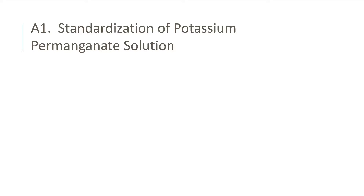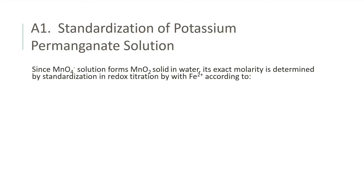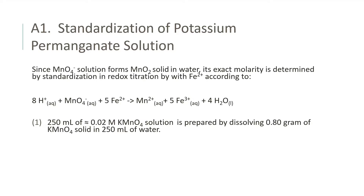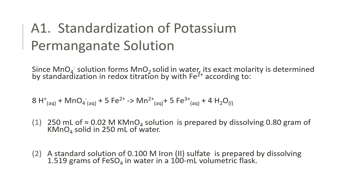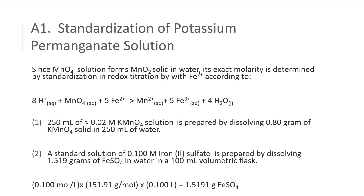A1: Standardization of Potassium Permanganate Solution. When the permanganate solution is dissolved in water, it forms a manganese oxide solid. Its exact molarity is determined by standardization and redox titration with iron 2+ ions according to the equation below. To prepare a 250 mL solution of 0.02 molar potassium permanganate, dissolve 0.8 grams of potassium permanganate solid in 250 mL of water. A standard solution of 0.1 molar iron 2 sulfate is prepared by dissolving 1.519 grams of iron sulfate in water in a 100 mL volumetric flask.